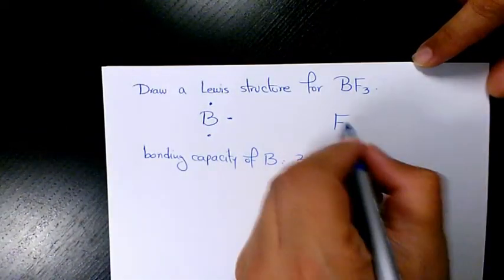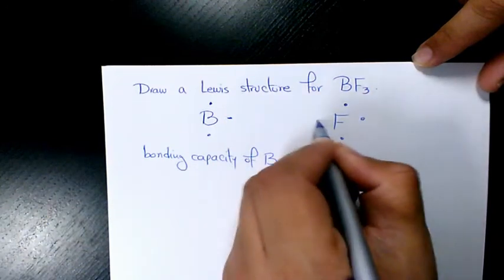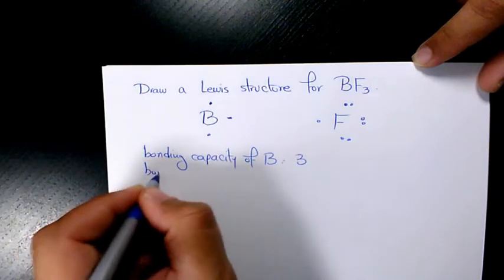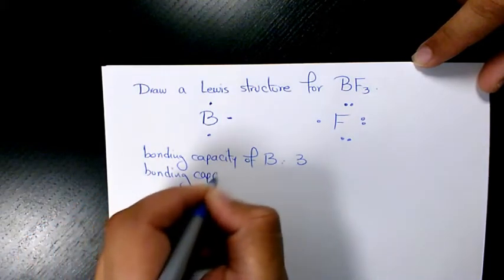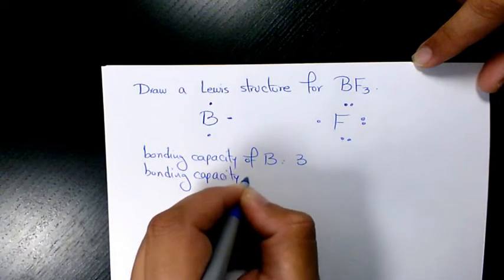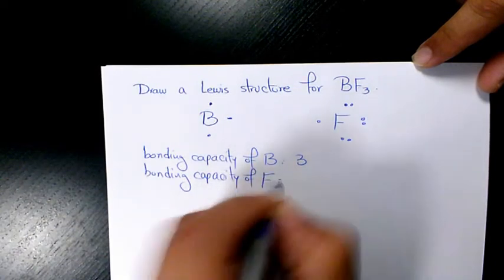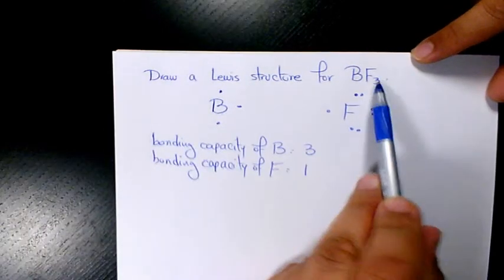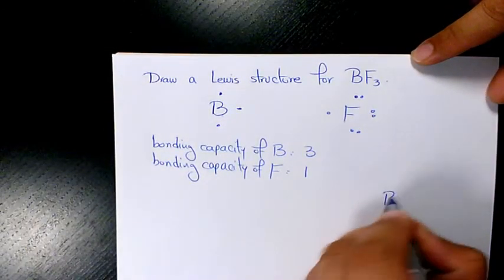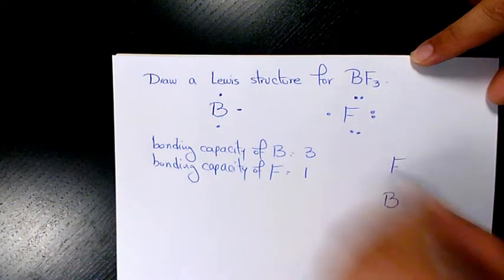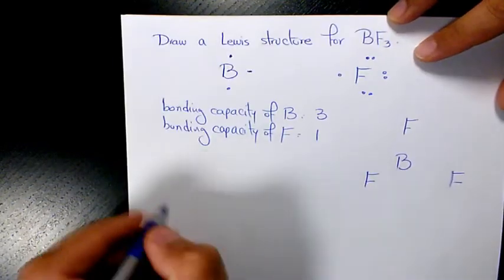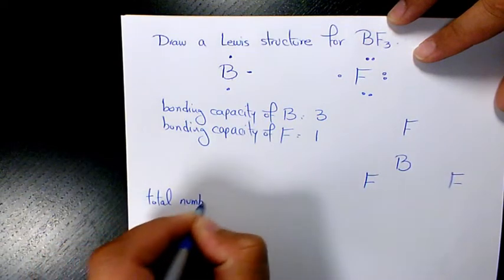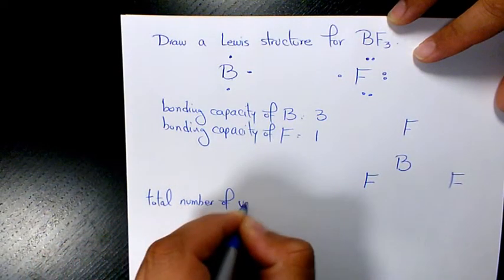As you see here, the bonding capacity for fluorine is one. So it means that boron is the central atom and F is the surrounding atom. So I'm gonna write it like this: B, F, F, and F.